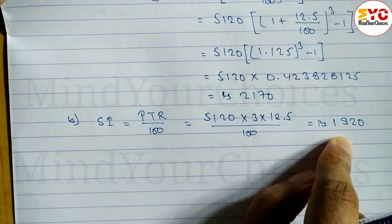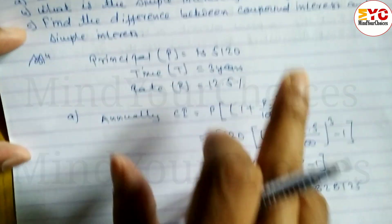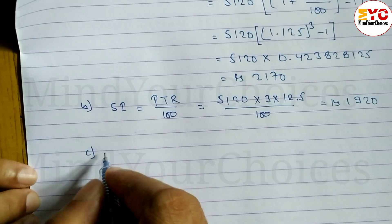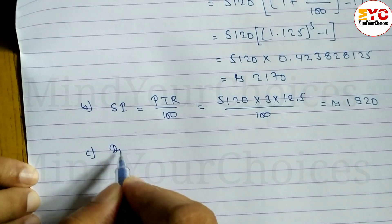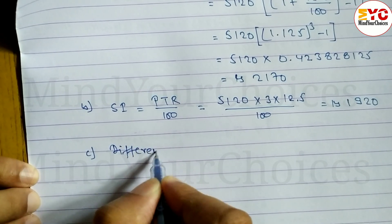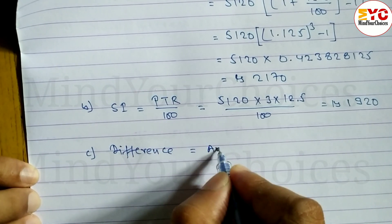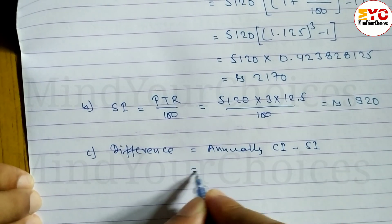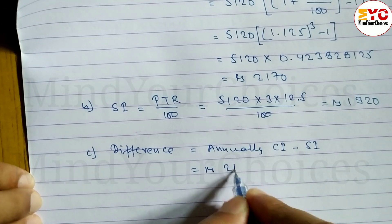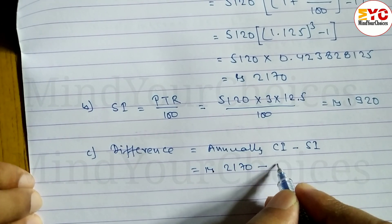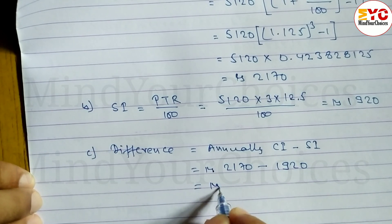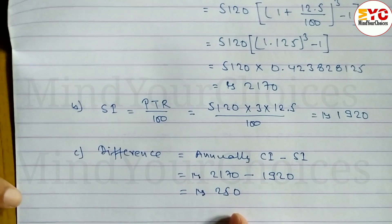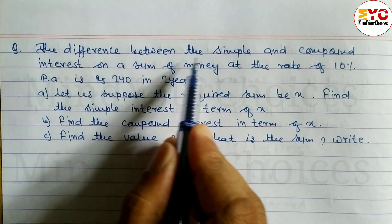In question part C, we have to find the difference between compound interest and simple interest. So difference = annual CI − SI = Rs. 2,170 − Rs. 1,920. Calculating by subtracting, the difference is equal to Rs. 250.